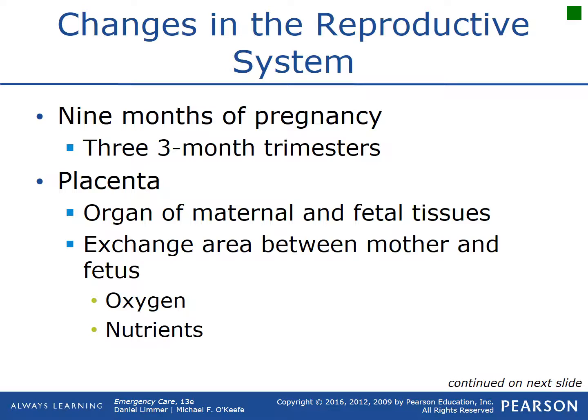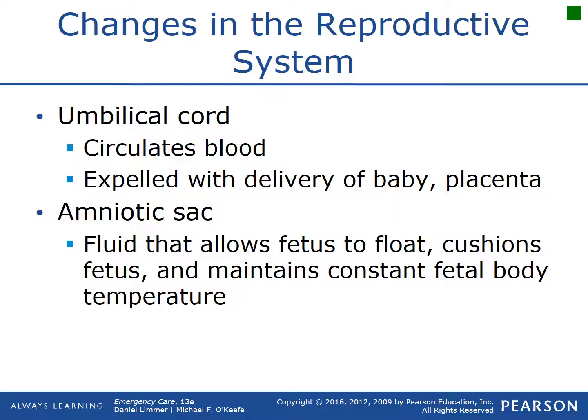The placenta is the tissue connected to the baby that provides all the oxygen and nutrients — it's the exchange area between the mother and the fetus. The umbilical cord is attached to the placenta and is the life cord into the fetus, responsible for circulating blood. Everything within that is inside the amniotic sac, a fluid-filled structure that allows the fetus to float, cushions it, and maintains a good fetal body temperature.